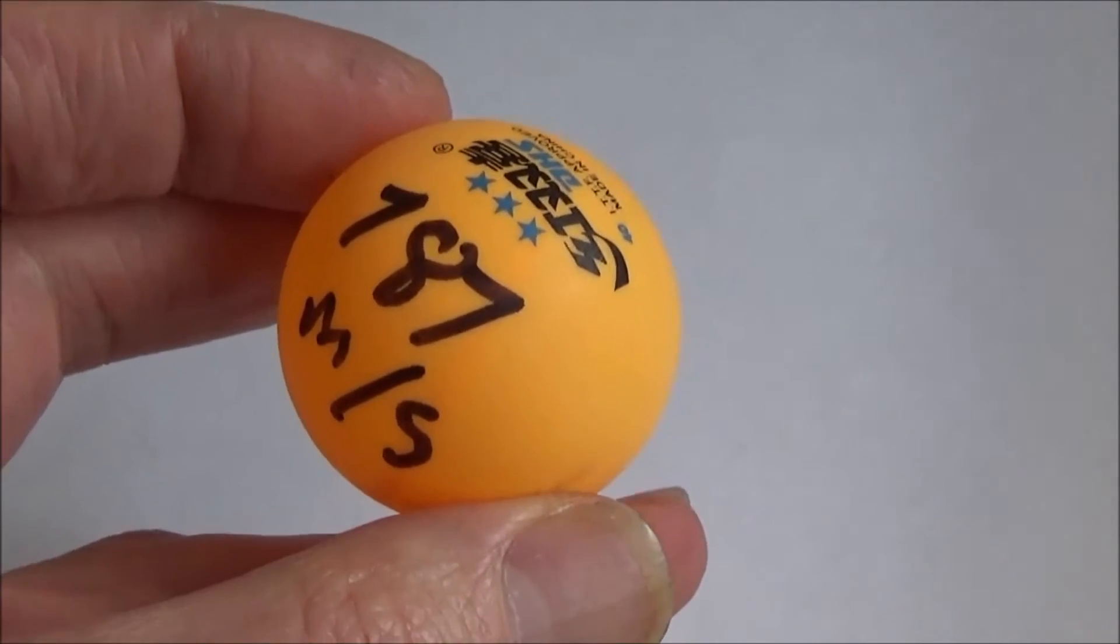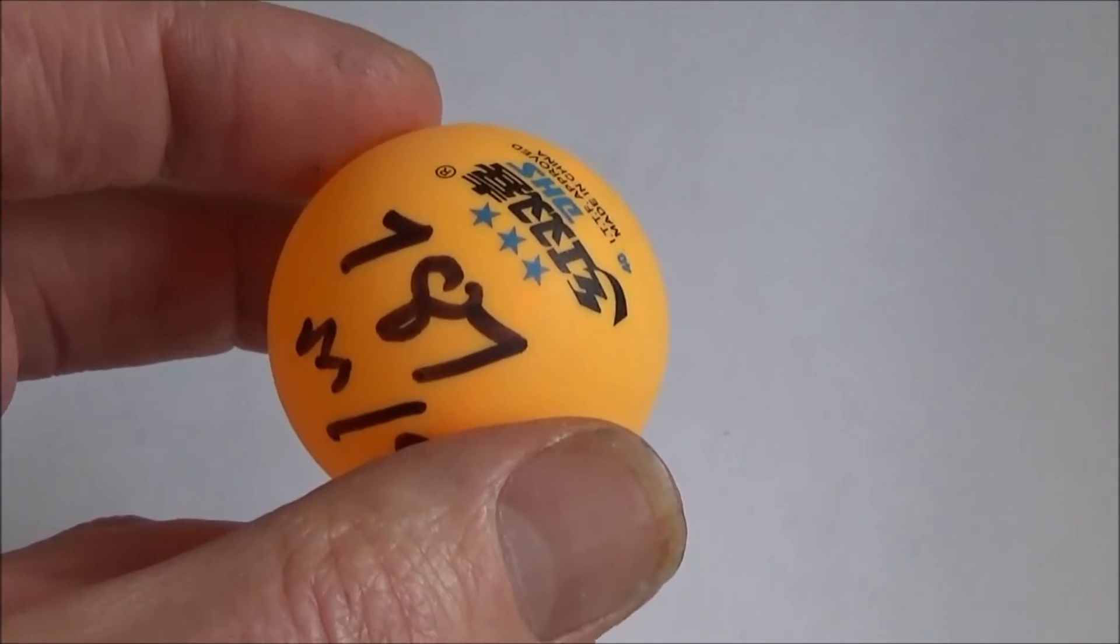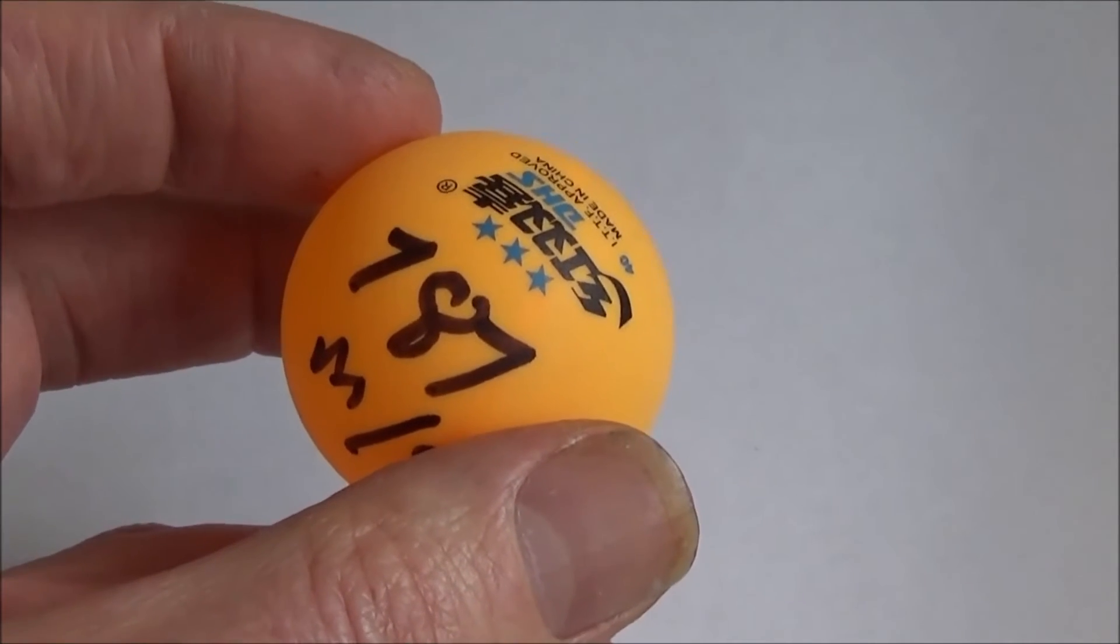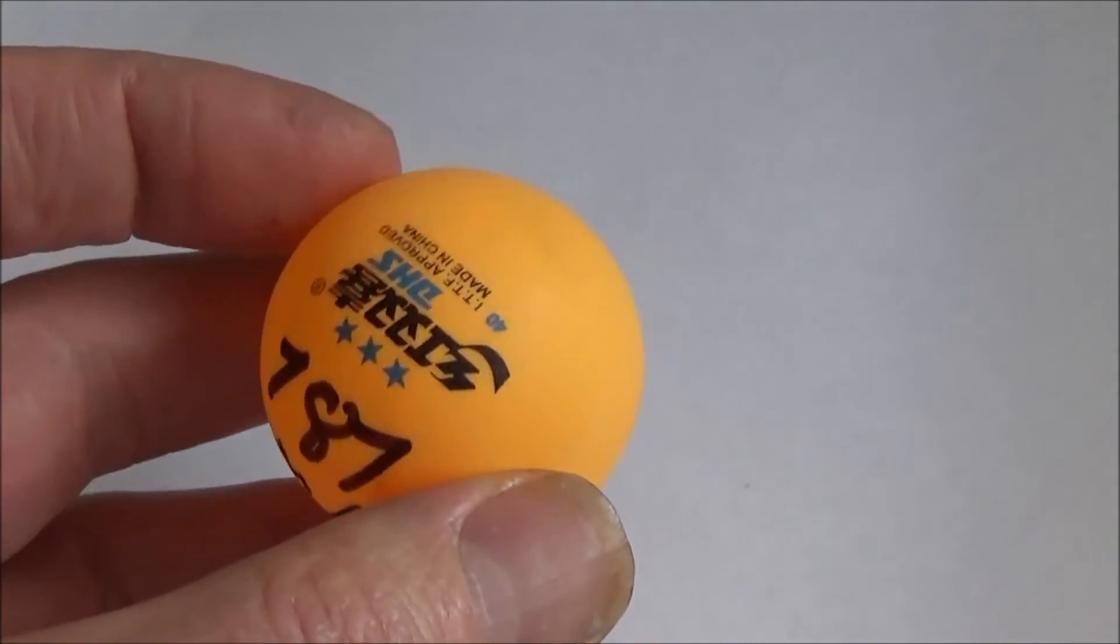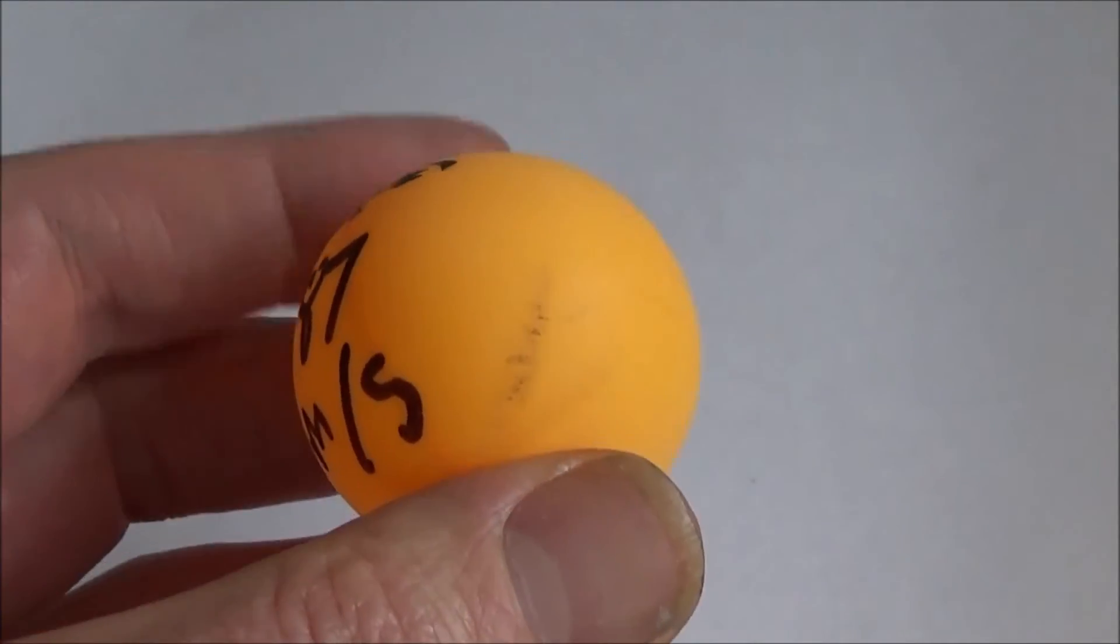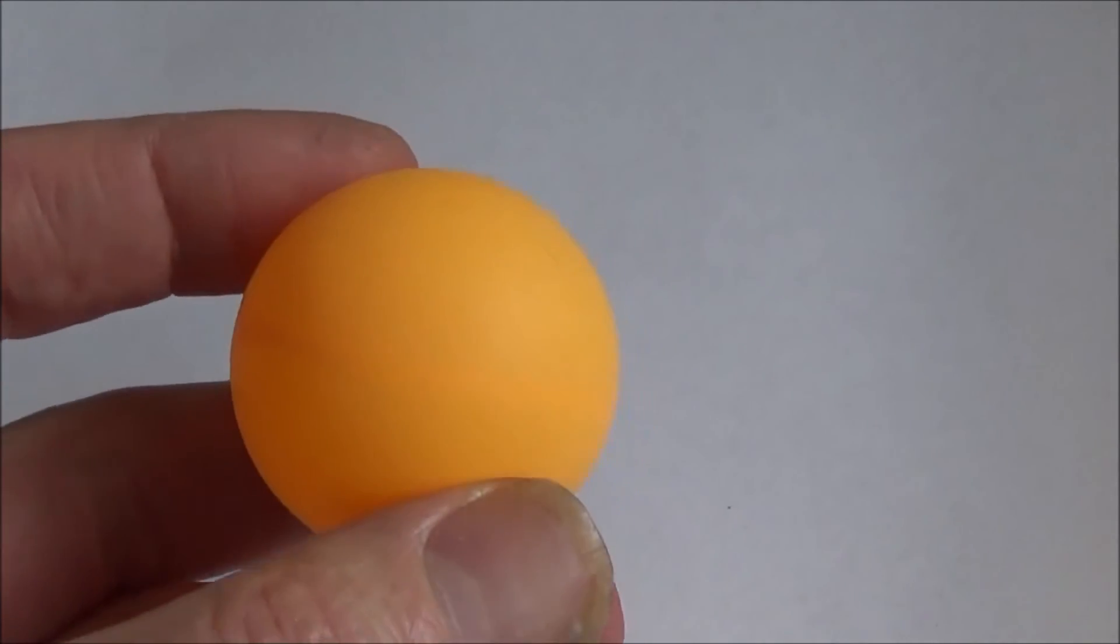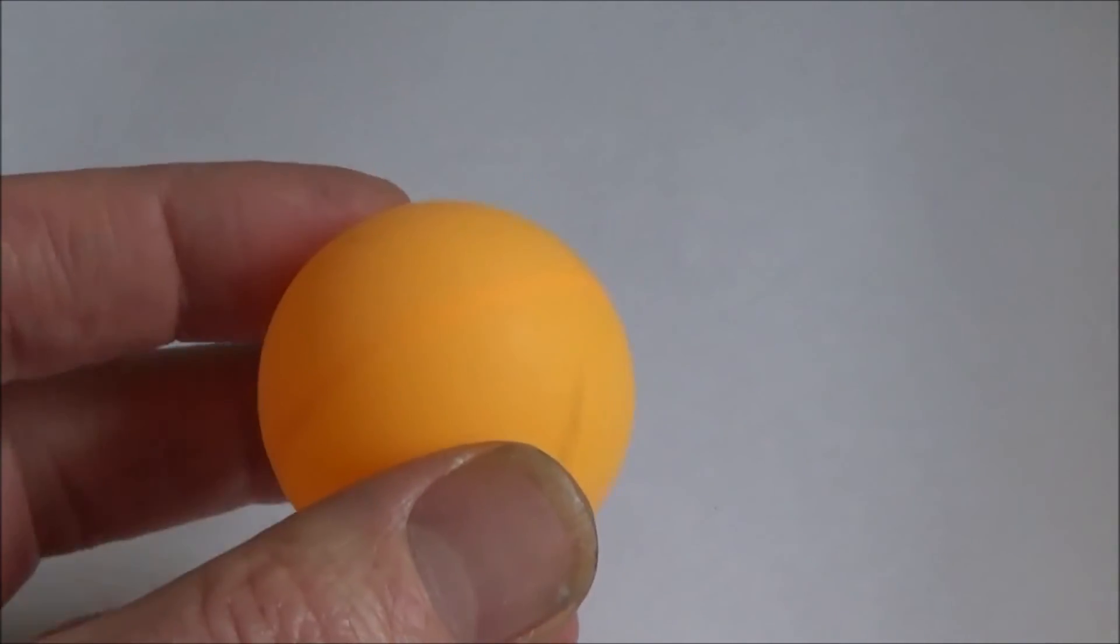Here's the actual ping-pong ball that was just launched in the first part of this video. It was launched at 787 meters per second. You can see some faint little scuff marks from it going down the launch tube, but otherwise the ball was still intact.